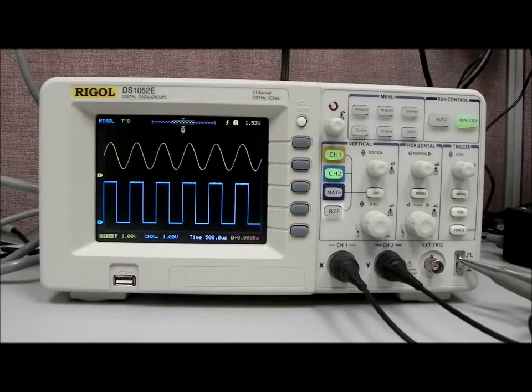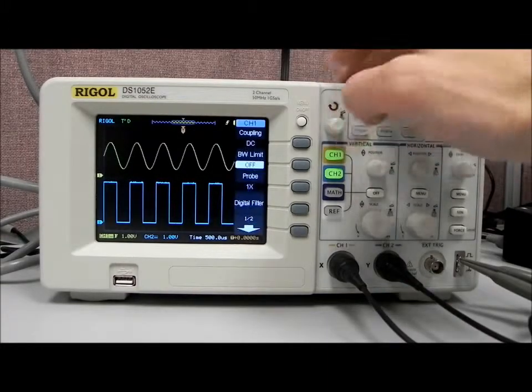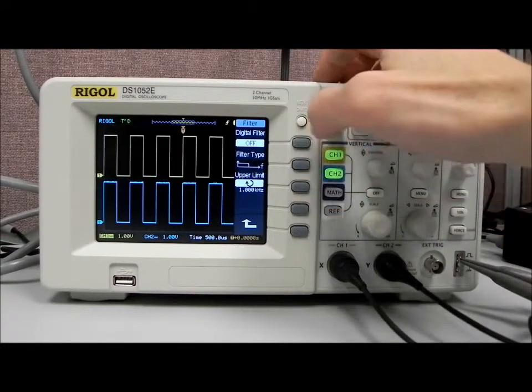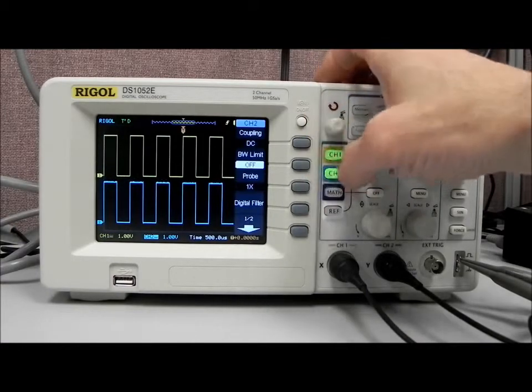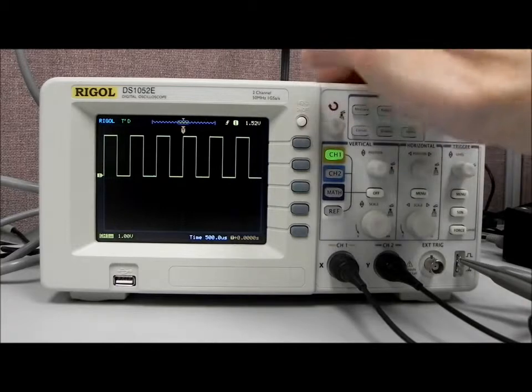Now let's take a look at the DS-1000 series measurement capabilities. I'm going to turn off the digital filter on channel 1, and I'm also going to disable channel 2, just so we have a little bit more room on the display.